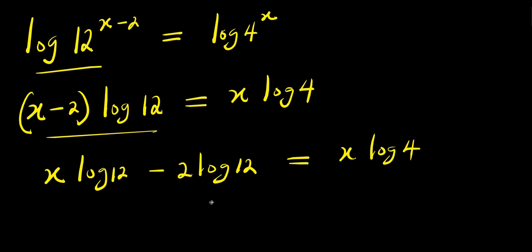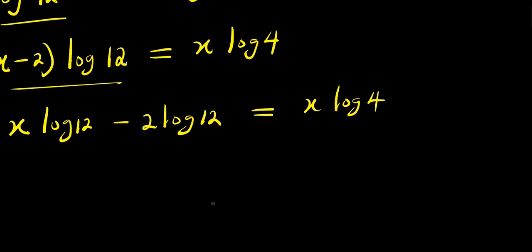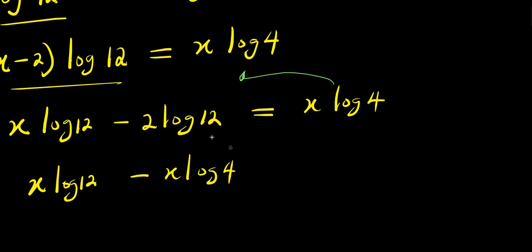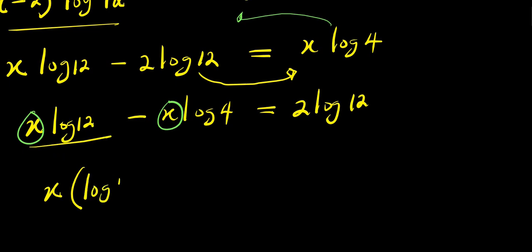From here we can apply another property of logarithm. We move the x times log 4 over to the left side, so it becomes negative. We have x times log 12 minus x times log 4, and on the right side we have 2 times log 12. Factoring out x, we get x times (log 12 minus log 4).